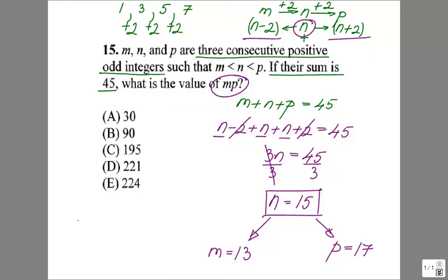And now to find my MP product, MP will be 13 times 17. And we know this is definitely something that's greater than 200. You don't even have to multiply this number. Just look at your last two digits, 3 and 7. 3 times 7 will be 21. So I know my number should definitely end in 1, and the only option I have in here will be D, but you can check.